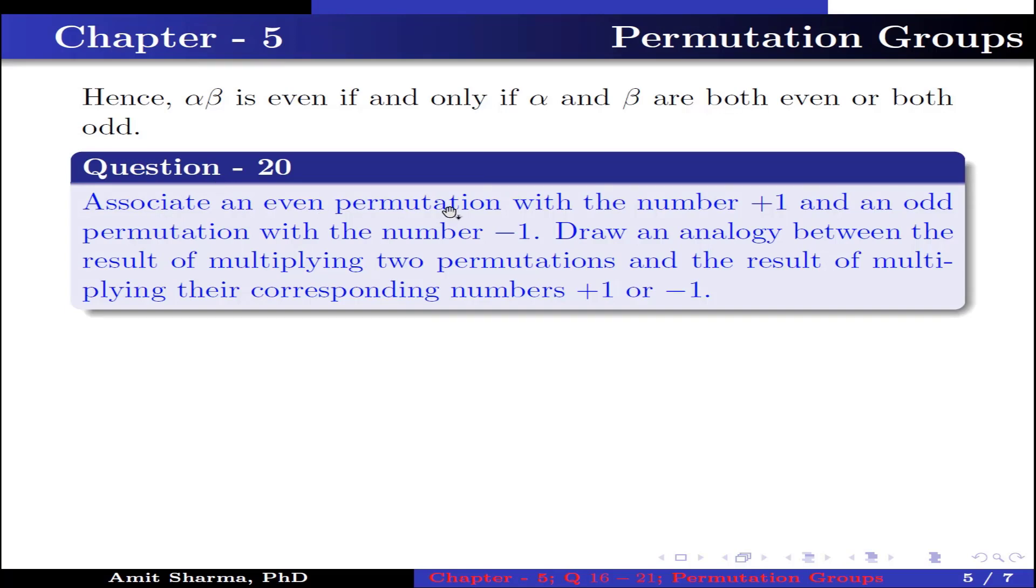Question number 20. Associate an even permutation with number +1 and odd permutation with number -1. Draw an analogy between the results of multiplying two permutations and the result of multiplying their corresponding numbers +1 or -1.